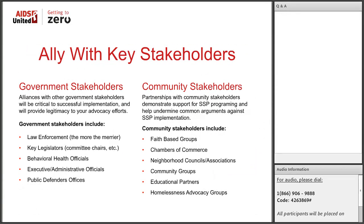Consider building allies with key stakeholders, both government and community. Every piece of federal guidance talks about the need for law enforcement buy-in. I would strongly encourage organizations to start building relationships with local law enforcement. There are examples of this being done really well in places like North Carolina, Gloucester, Massachusetts, Seattle, and Arlington — places running law enforcement-assisted diversion programs. Having law enforcement in support of SSP programs will go a long way toward easing both implementation and obtaining that funding.